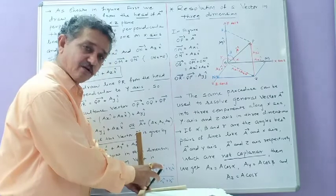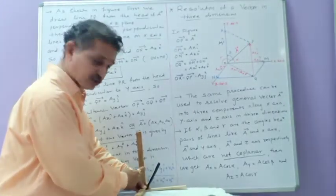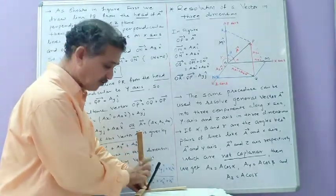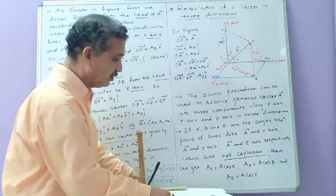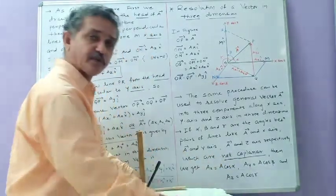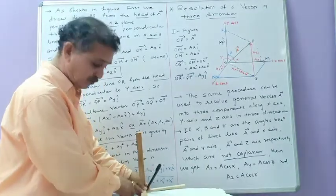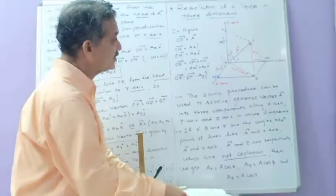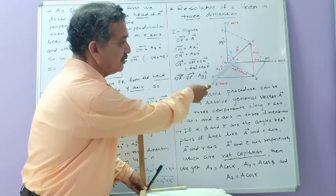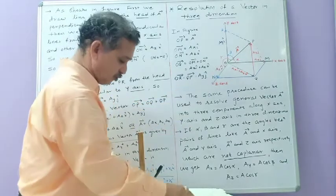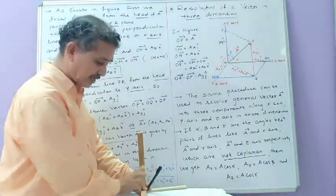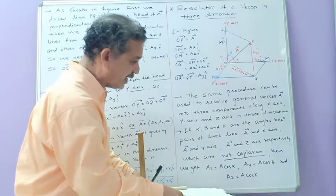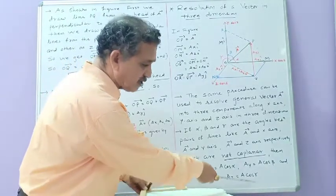Similarly, this vector A makes an angle beta with the y-axis. Along the y-direction, you get the y-component, and Ay equals the magnitude of this vector multiplied by cos of the angle. So Ay equals A cos β. At the same time, this vector A makes an angle gamma with the z-direction. Along the z-direction, you get the component Az equals magnitude A multiplied by cos γ. So Az equals A cos γ.